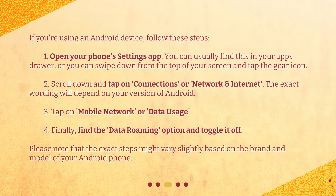3. Tap on Mobile Network or Data Usage. 4. Finally, find the Data Roaming option and toggle it off. Please note that the exact steps might vary slightly based on the brand and model of your Android phone.